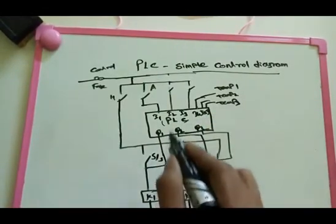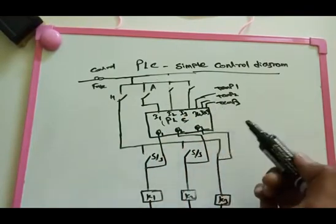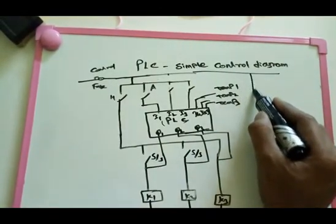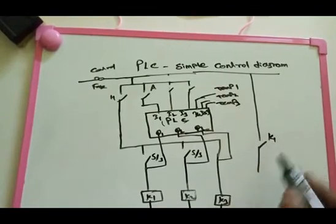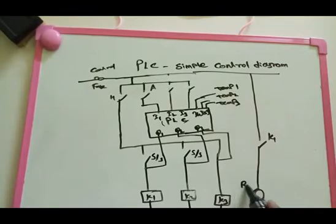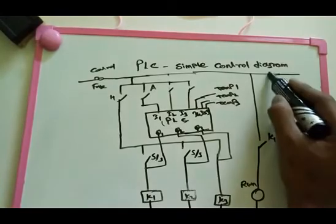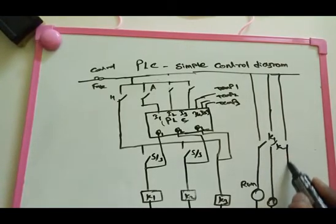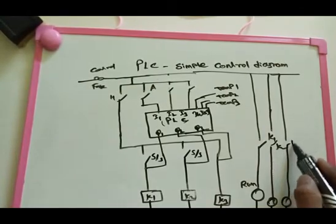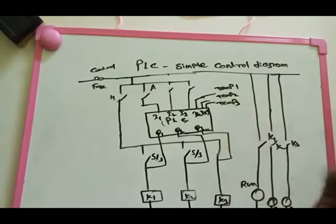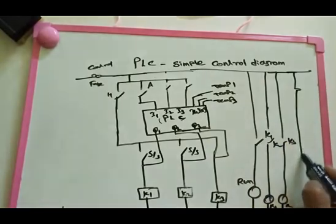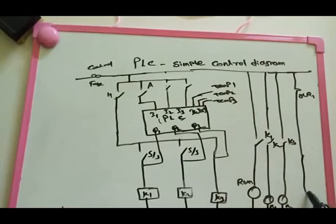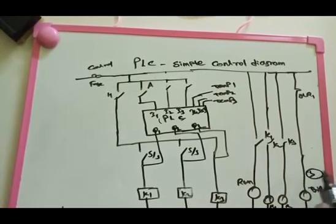After that, we indicate which AC is running. For K1, we make a CNO contact to switch on a run indication lamp. Similarly we make K2 and K3 indication lamps for AC2 and AC3. After that we need trip signals — we use OLR1 to make a trip lamp. Like that we make three trips for all three ACs. This is the complete diagram of simple PLC control. Thank you for watching.